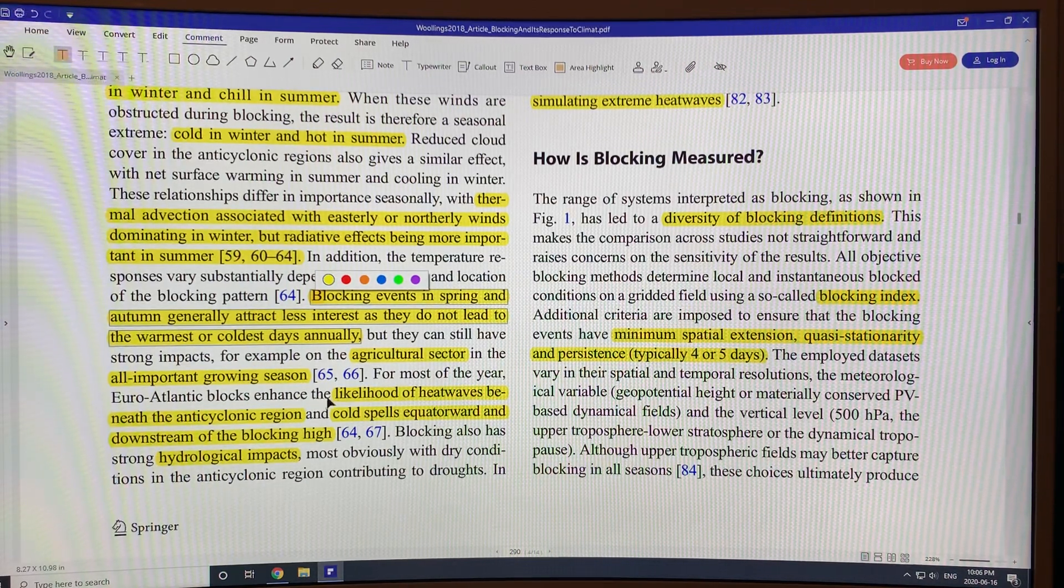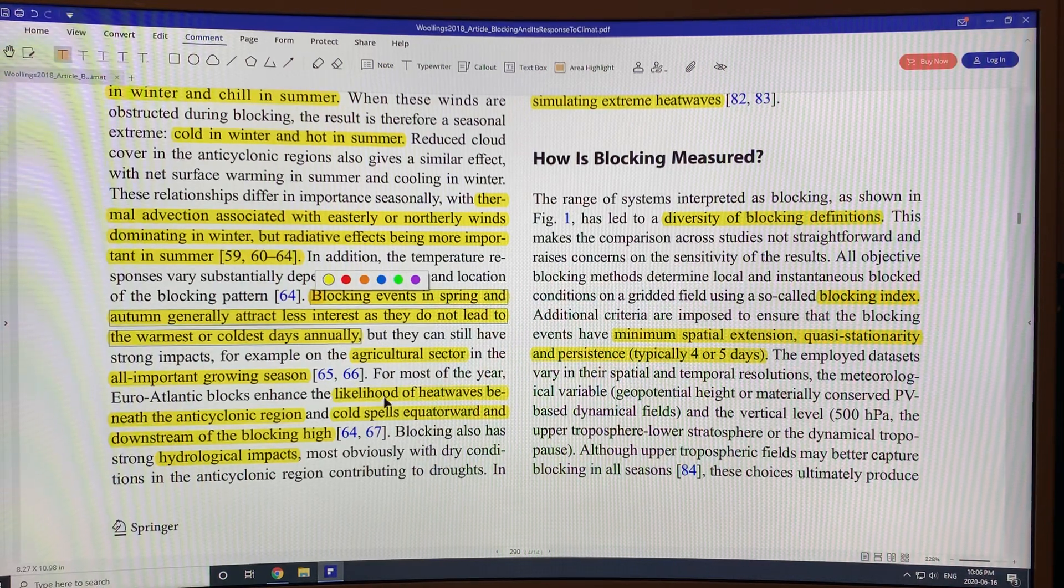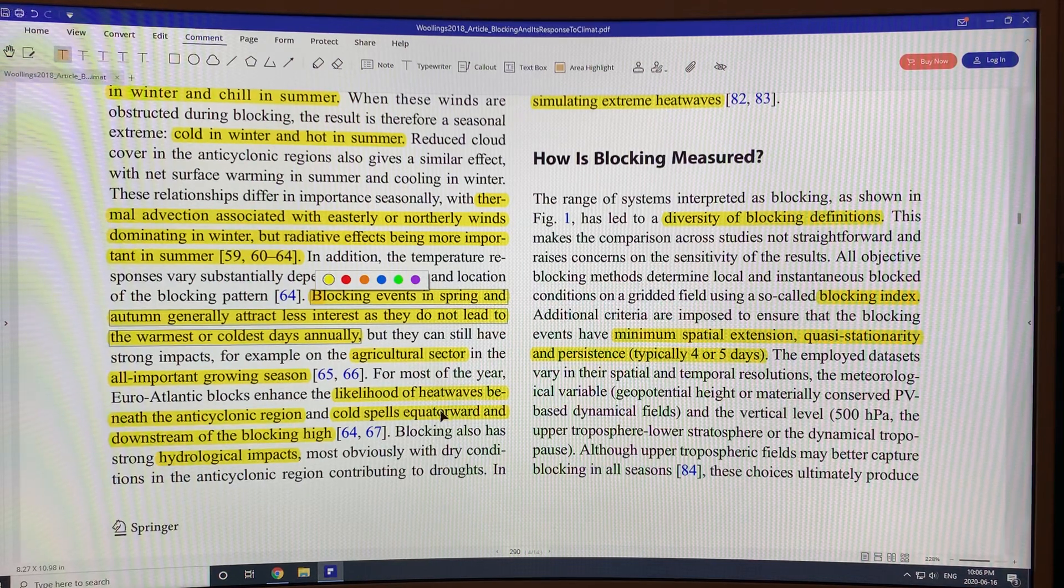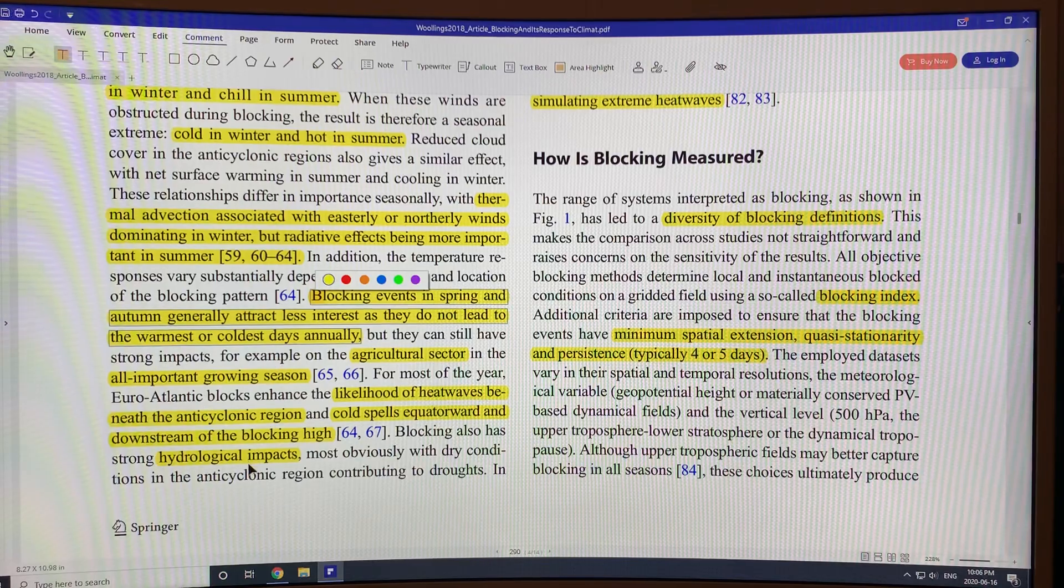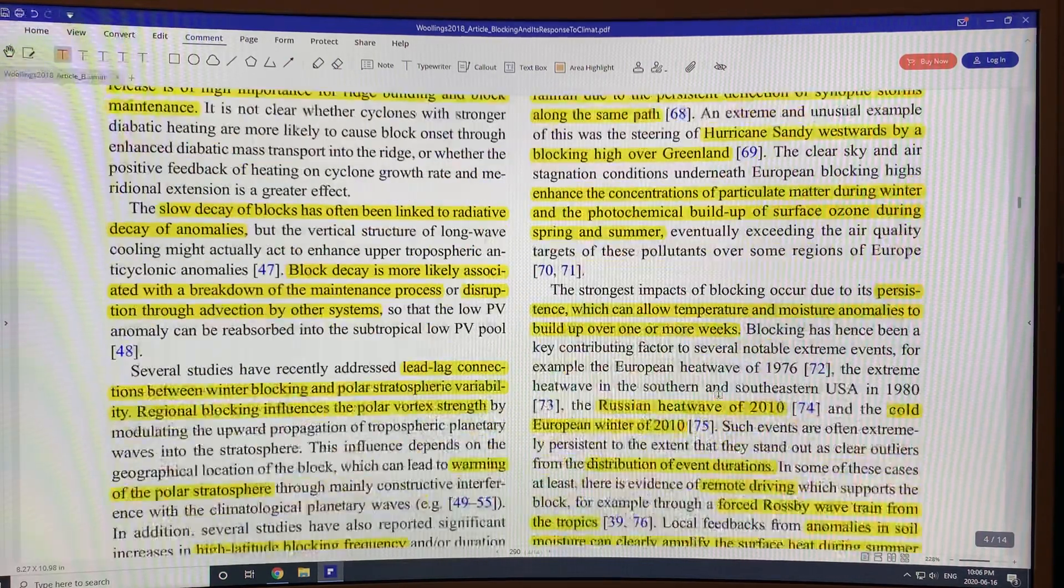These blocks over the Euro-Atlantic blocks enhance the likelihood of heat waves beneath the anticyclonic region and cold spells equatorward and downstream of the blocking high. Blocking also has strong hydrological impacts.